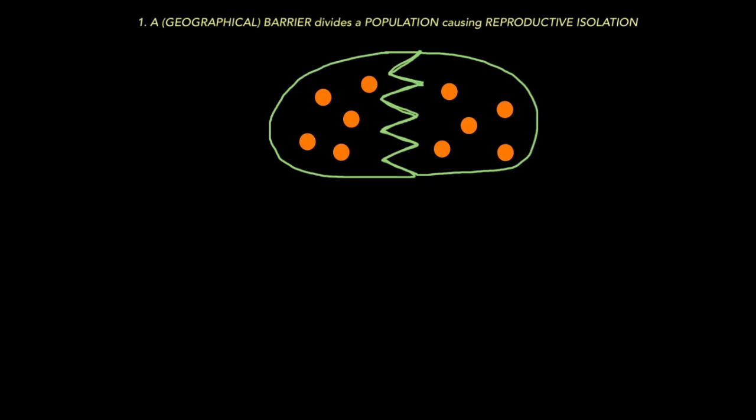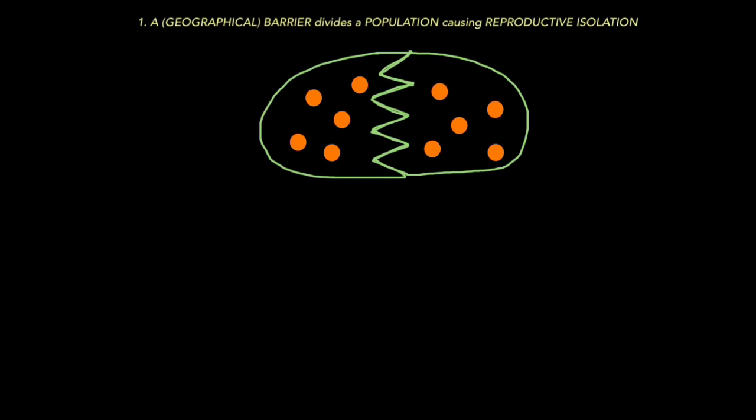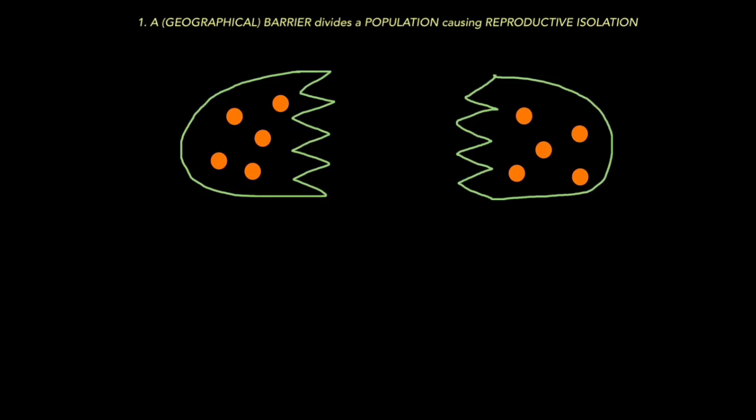If you have to answer a question on speciation, this is the process. First, a barrier, it could be a geographical barrier, which is what I'm going to show you, but the barrier can also be more subtle, divides a population causing reproductive isolation. Here we have an island with different organisms of the same species. The island's connected so they can all meet and reproduce and pass on their genes. However, let's say an earthquake happens and the island gets separated. This is an example of a geographical barrier. But barriers don't have to be this extreme. For example, you can have time barriers instead. To avoid competition, certain organisms start hunting at night whereas others hunt during the day. So they occupy different time zones. This will also create a barrier that leads to reproductive isolation. In other words, this group can no longer reproduce with this group.